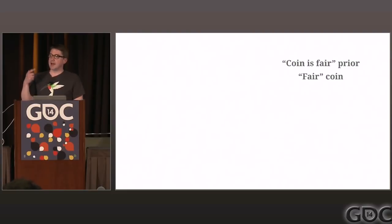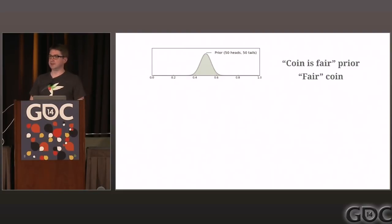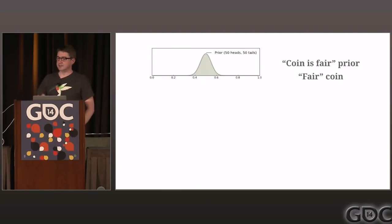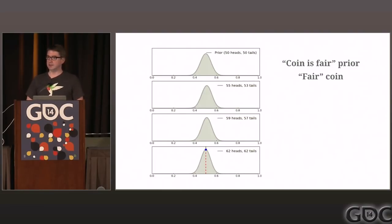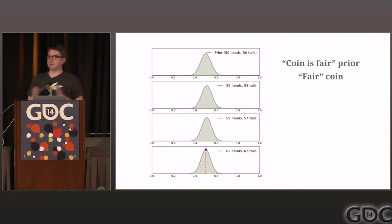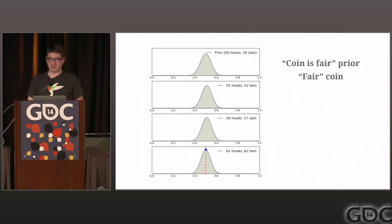If we have prior knowledge that the coin is fair — say we previously saw 50 heads and 50 tails and start the experiment with that data as our prior — running it a few more times, even though we're getting similar data, the shape of the curve hasn't changed at all. Nothing has come in to upset our belief that the coin is fair. All we've done is improved our certainty — the curve has become tighter.